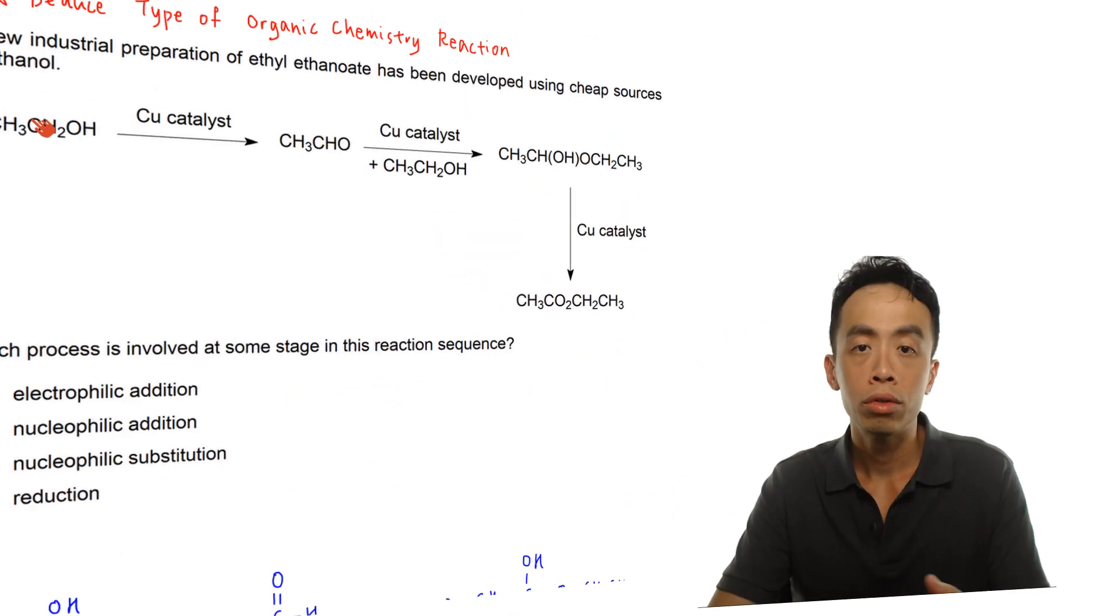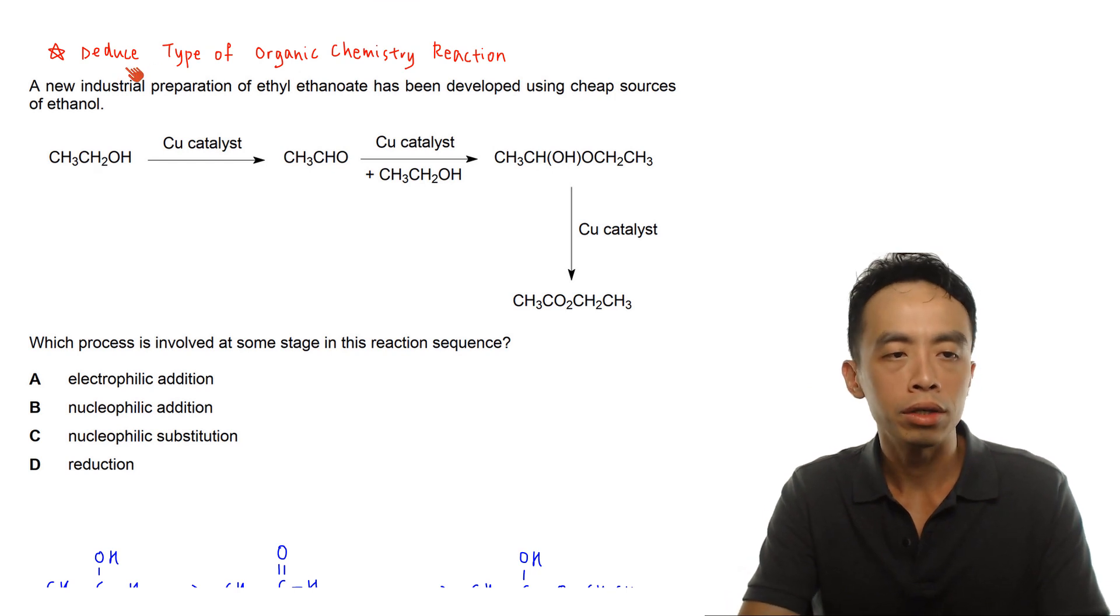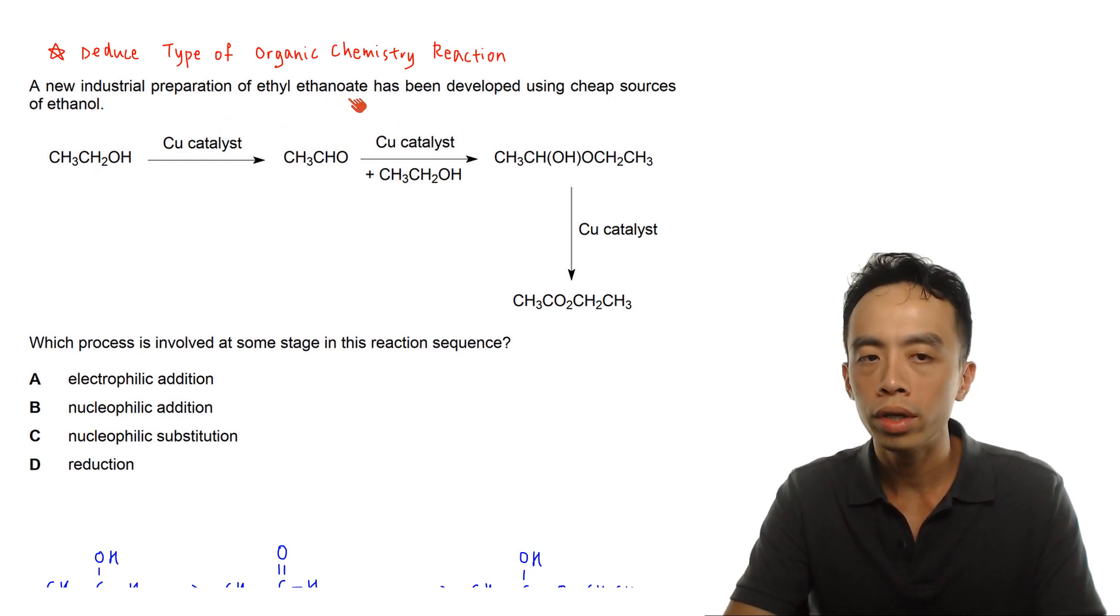Hi everyone, this is Maverick Pua, the chemistry guru. In this video we want to go through an exercise to deduce the type of reaction in organic chemistry. The question goes something like this: a new industrial preparation of ethyl ethanoate, so this guy is an ester, has been developed using cheap sources of ethanol.